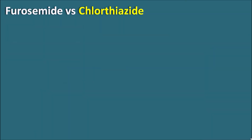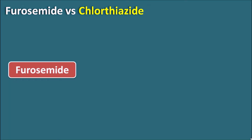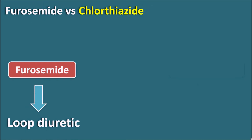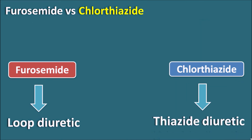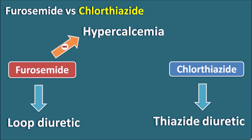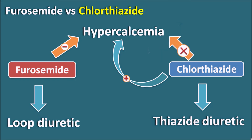Now let us see the difference between furosemide and chlorothiazide. Furosemide is a loop diuretic, while chlorothiazide belongs to the thiazide diuretics. In hypercalcemia, furosemide increases calcium excretion, thereby decreasing calcium levels in the serum — so furosemide inhibits hypercalcemia and is indicated for it. Chlorothiazide, on the other hand, increases hypercalcemia by retaining calcium within the blood, so it should not be indicated in this condition.